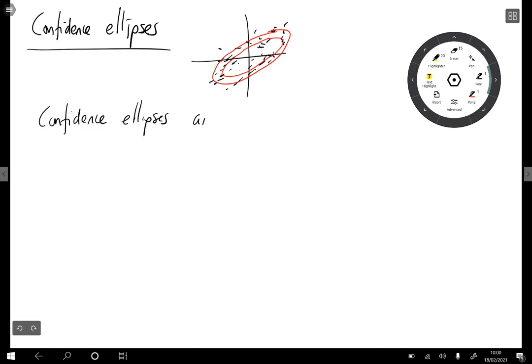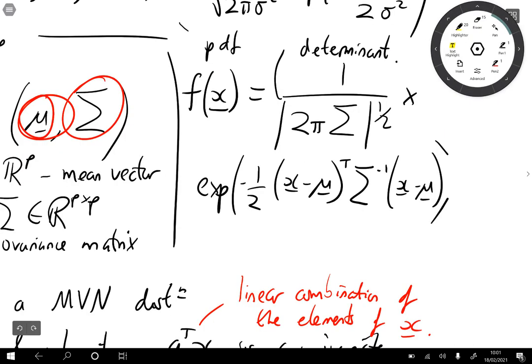So the confidence ellipses are defined to be the x's such that the pdf of x is some constant c. If you remember the pdf, saying that f(x) is constant is the same as saying that this bit here is constant and that it's only x that varies.